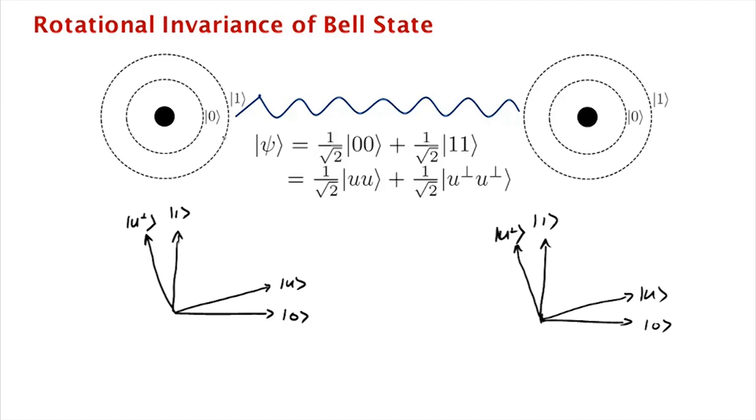what you get is that the Bell state can be written as an equal superposition of 0, 0 and 1, 1, or as an equal superposition of uu, u perp u perp.